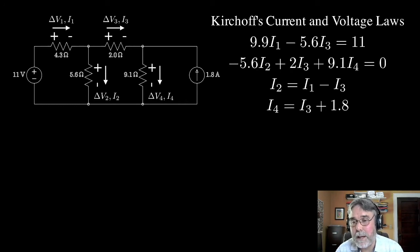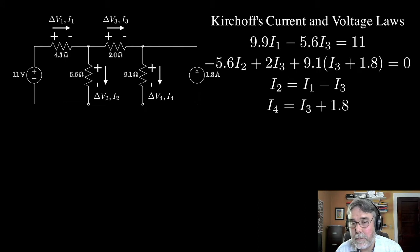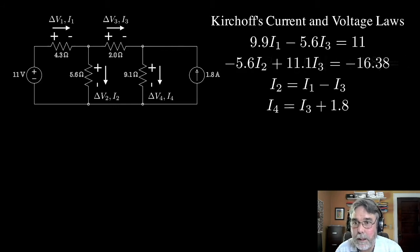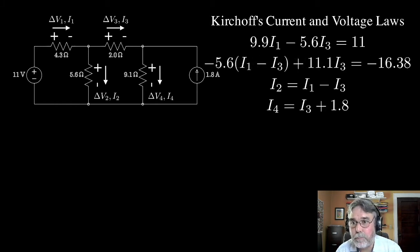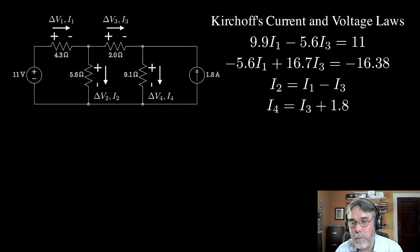First, I can replace I4 with I3 plus 1.8. Let's do that. And then I can collect all the I3 terms together. I've got a 2 and I've got a 9.1, so that's going to give me an 11.1. Now I can replace I2 with I1 minus I3. Let's go ahead and do that. And you can see that now the 5.6 I'll distribute and then collect the I3s together again. And when the smoke clears, I end up with these two equations.